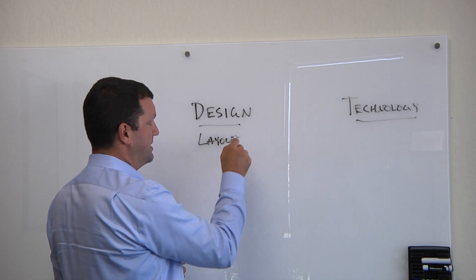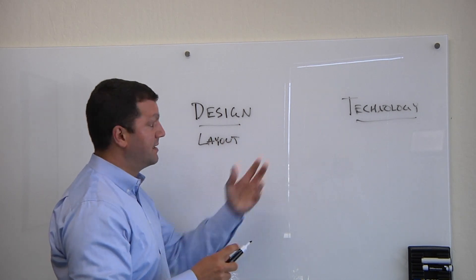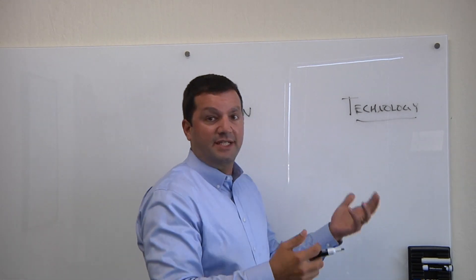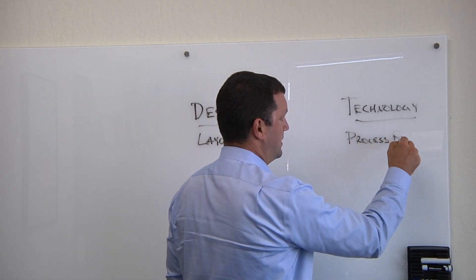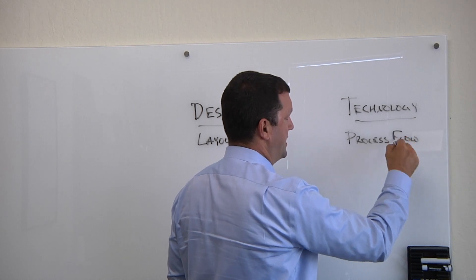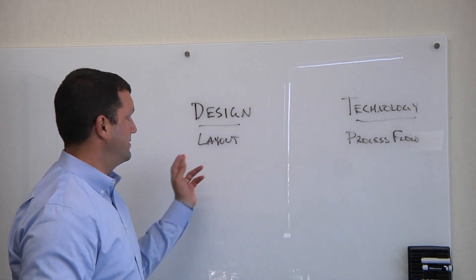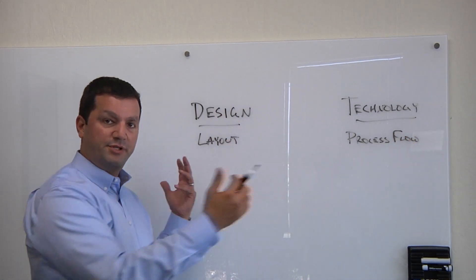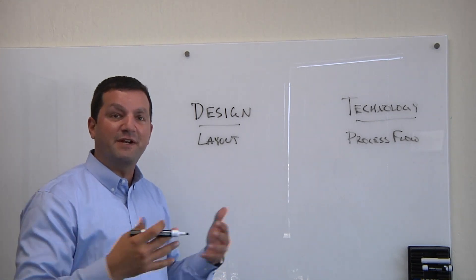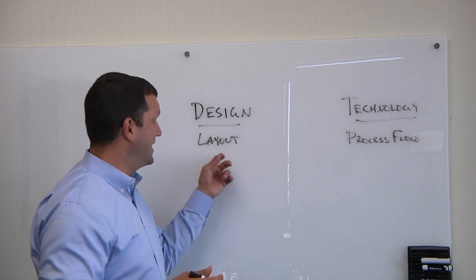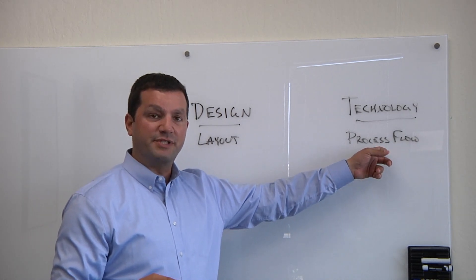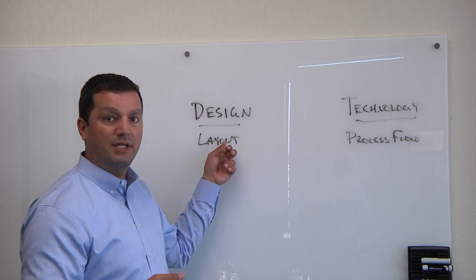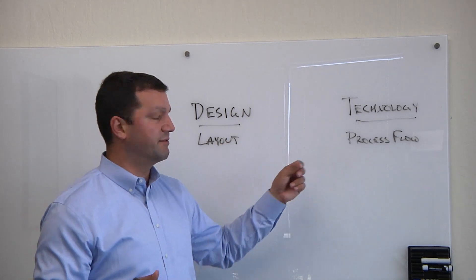The chip designers have to produce the design of the chip and in the end, the layout - the physical design that's going to become masks. The technology team has to put together a process flow - how that chip is going to be fabricated in the fab. Those are the things that have to be produced by the two groups, but obviously they're very heavily interconnected.